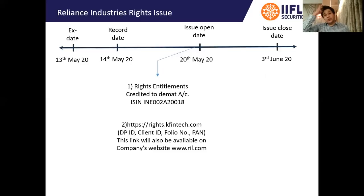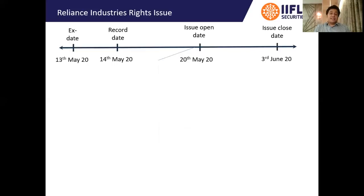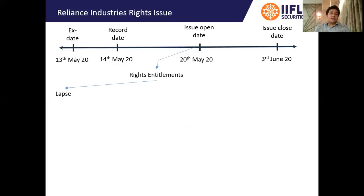Once you discover your rights entitlements, you will be faced with three options. First, you can allow them to lapse — if you take no action, they will lapse automatically. Second, you can subscribe to the rights entitlements — for example, if you are entitled to receive 10 shares of Reliance at Rs.1,257 per share, you pay Rs.1,257 per share and buy those shares from the company. Third, you can renounce your rights to somebody else, who will give you some consideration in return.